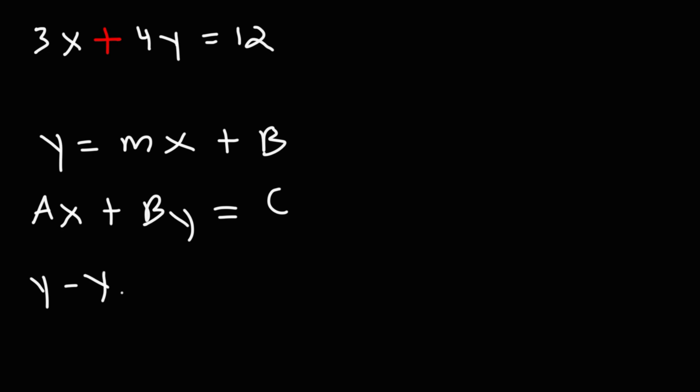And there's also this one, y minus y1 is equal to m times x minus x1. This is the point slope form of a linear equation.